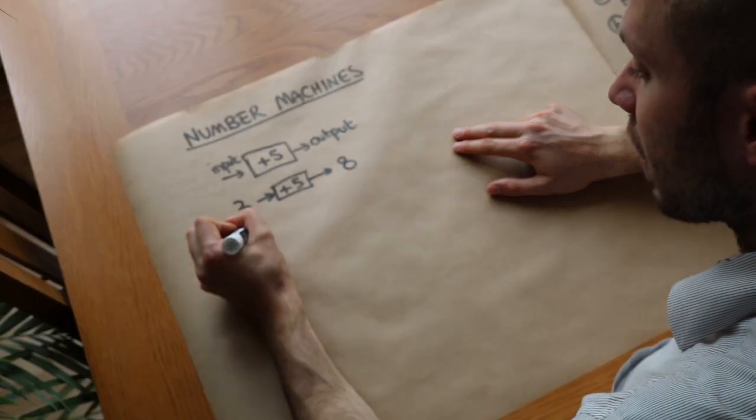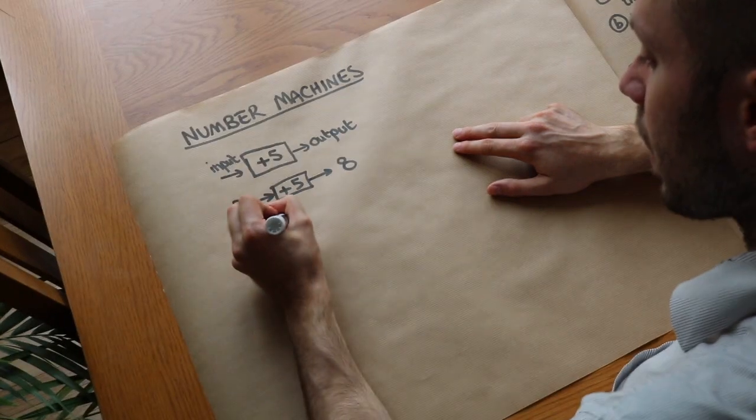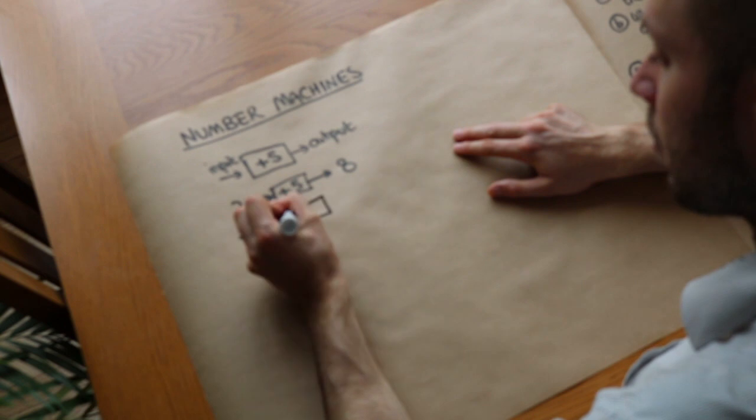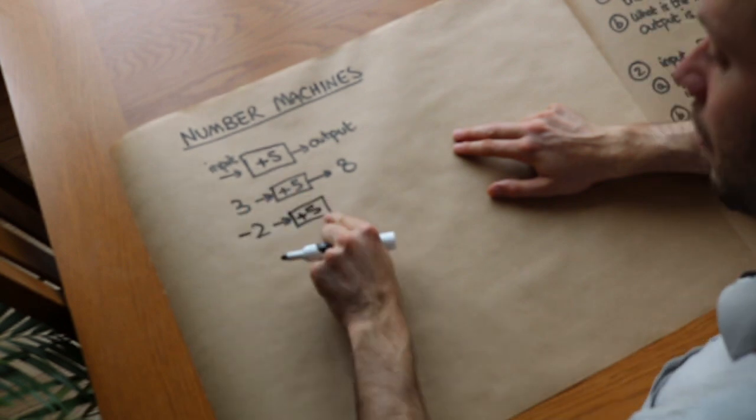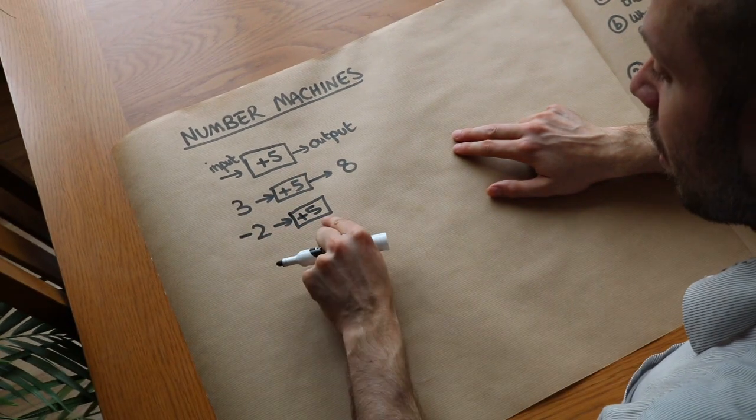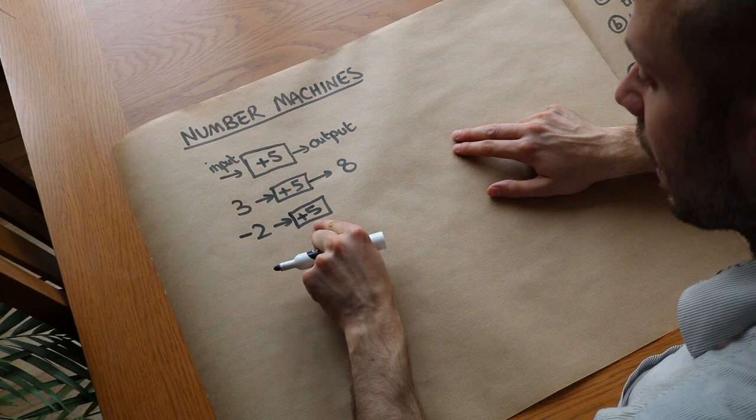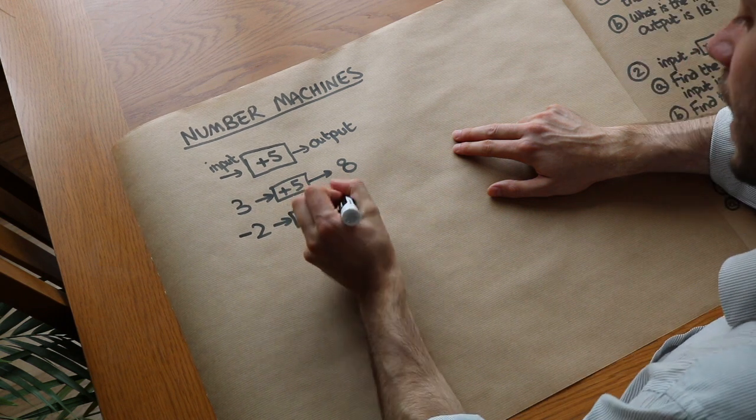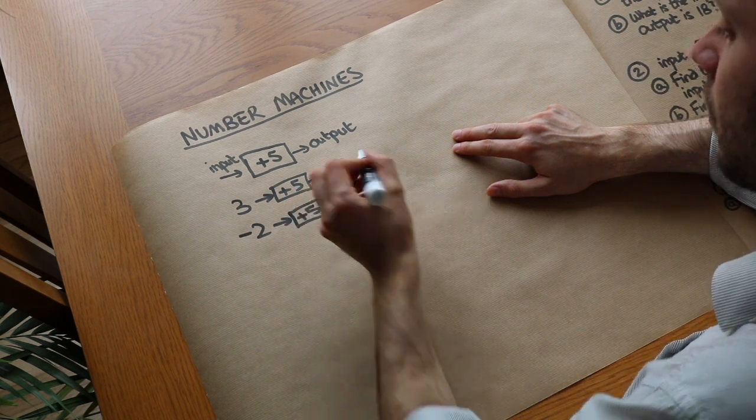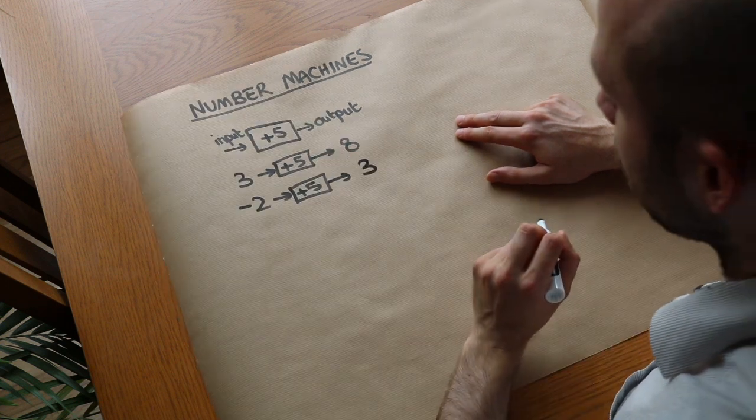Or just to take another example, if I use an input of minus 2 and I input that into my number machine, the number machine adds 5 to whatever the input was. Well, minus 2 is the input, add 5 to it, and then that gives you 3. Minus 2 plus 5 is equal to 3.